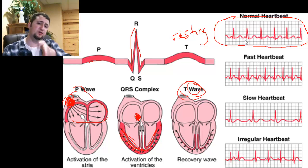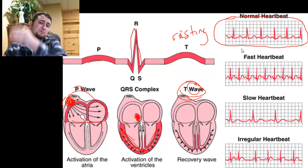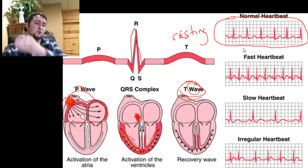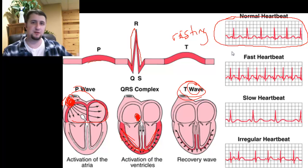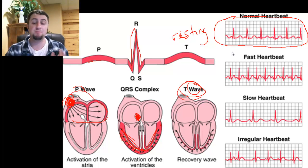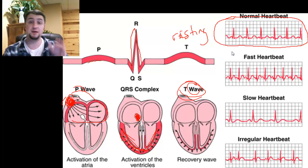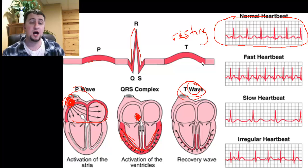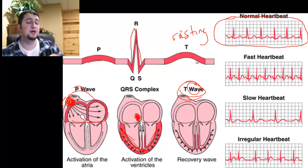And so that up-and-down motion that you might have seen on computer screens before — or the flat line when somebody's not alive — is actually the measurement of the heartbeat itself, and more specifically the measurement of at which point the heart is acting. Anyway, that concludes the heart and the heartbeat.